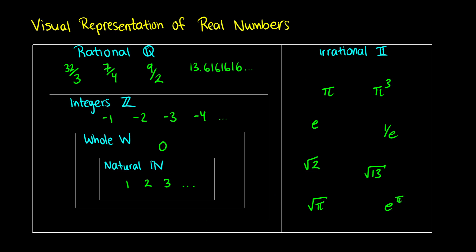Visually, because the numbers are contained within other sets — natural numbers are contained in the whole numbers, whole numbers are contained within the integers, and integers are contained within the rational numbers — we do have some embedding. Irrational numbers are separate from all of those. So there's no such thing as an irrational natural number, irrational whole number, irrational integer, or an irrational rational number.